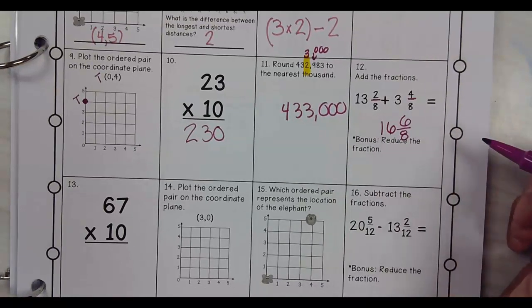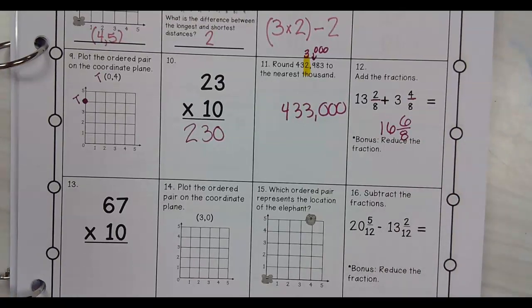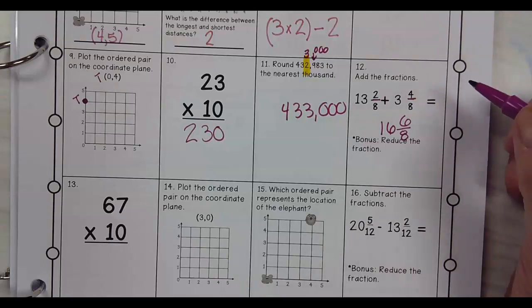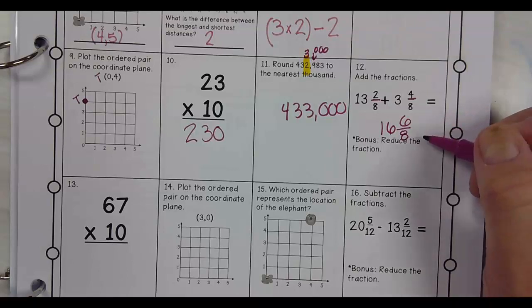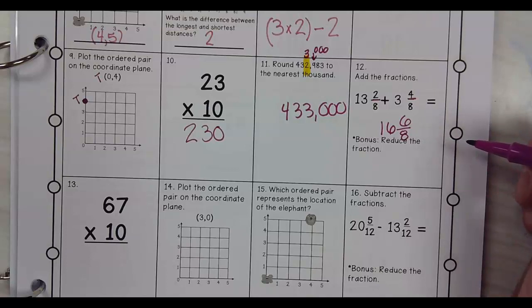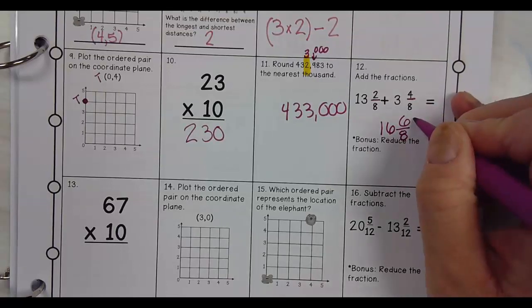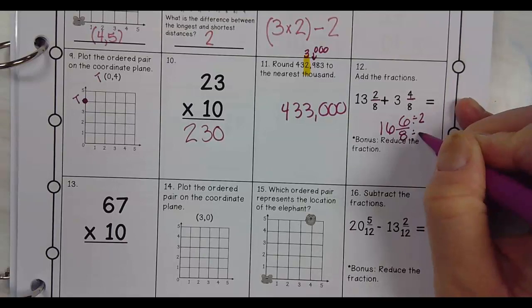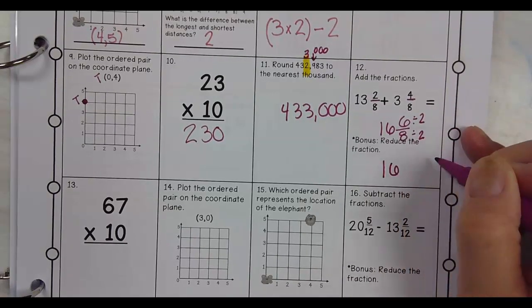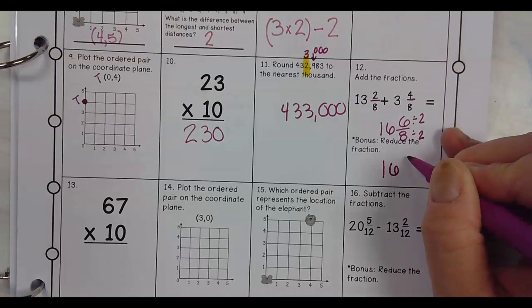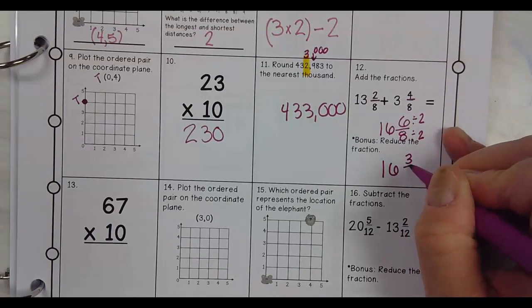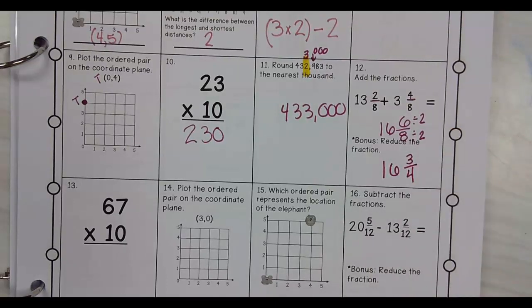16 and 6 8ths. Now I have to reduce the fraction. How do I reduce the fraction? 16 times 2. Times 2? 16 and 6. You're right. But are you timesing or are you dividing? Yep. So I'm going to divide the top by 2. Divide the bottom by 2. So I have 16 and 6 divided by 2 is 3, and 8 divided by 2 is 4. 16 and 3 4ths.